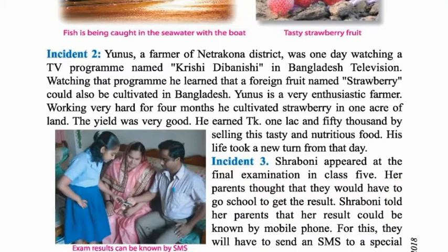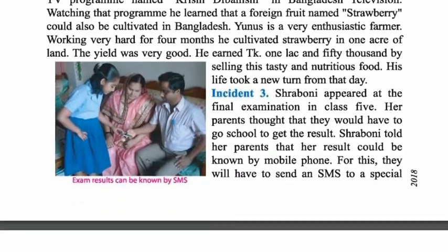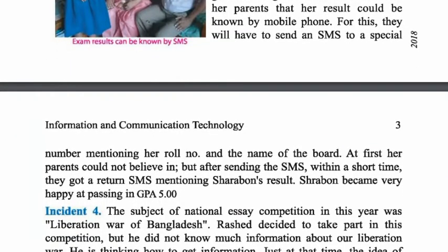Incident three: Sraboni told her parents that her exam result could be known by mobile phone. For this, they would have to send an SMS to a special number mentioning her roll number and the name of the board. At first her parents could not believe it, but after sending the SMS, within a short time they got a return SMS mentioning Sraboni's result. Sraboni became very happy at passing with GPA-5.